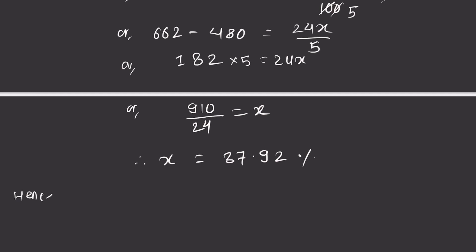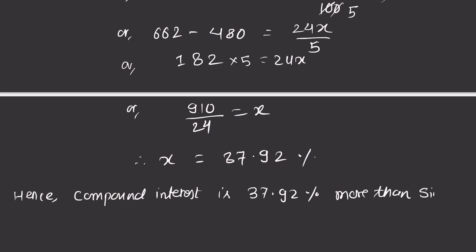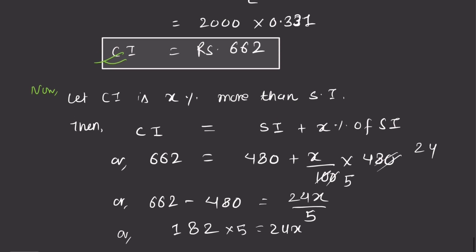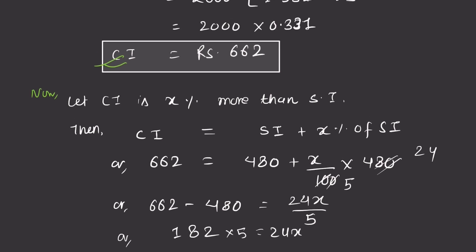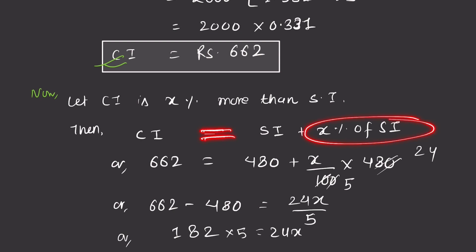Therefore X is equal to 37.92 percent. So compound interest is 37.92 percent more than simple interest. Hence compound interest is X percent more than simple interest — answer confirmed.